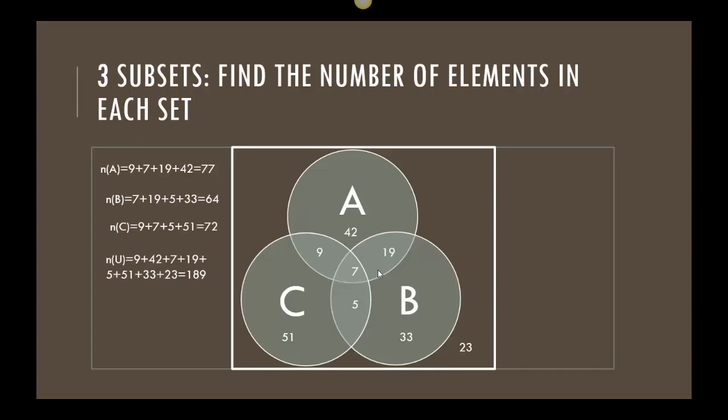Lastly, if I wanted to look at the universe, the universe is all of these numbers: 9, 42, 7, 19, 33, 5, 51, and 23. So I added all those up and I got 189.